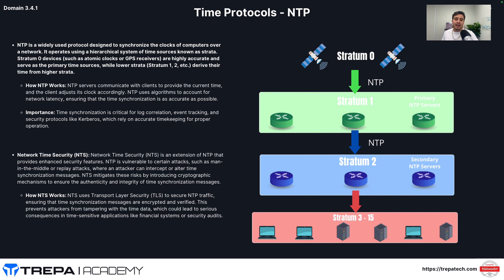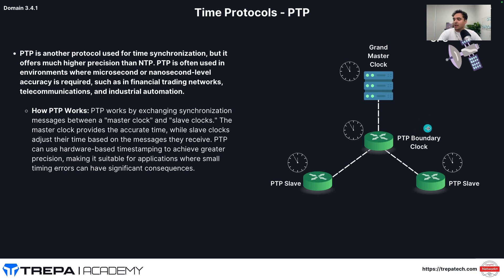PTP — Precision Time Protocol — does the same job as NTP but at higher precision: microsecond or nanosecond accuracy. It's used in OT environments, industrial control systems, financial trading, telecommunications, and industrial automation. NTP typically achieves millisecond-level precision, which you can verify with `show ntp associations` on a network device. PTP works by exchanging synchronization messages between a master clock and slave clocks. In standard IT networking, NTP is more commonly deployed.